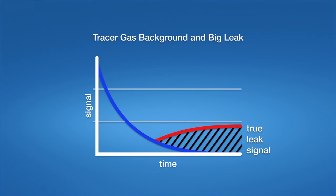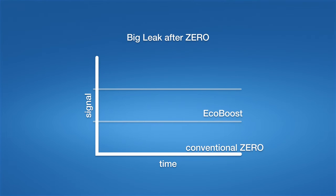The new inficon EcoBoost is able to predict the natural background. All it needs to work correctly are two seconds of the decreasing blue curve before pressing EcoBoost. As a result, the new EcoBoost will show the true leak size instead of an unknown fraction of it. This was in case of a rather big leak.